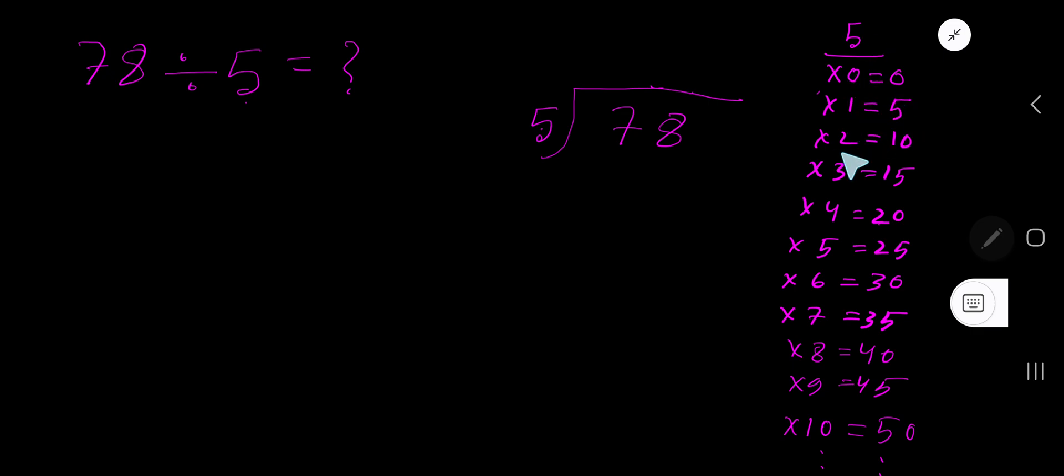5 times 0 is 0, 5 times 1 is 5, 5 times 2 is 10, 5 times 3 is 15, 5 times 4 is 20.